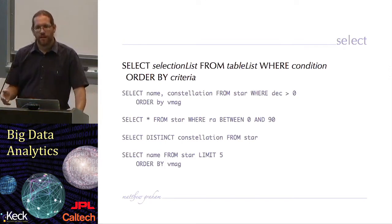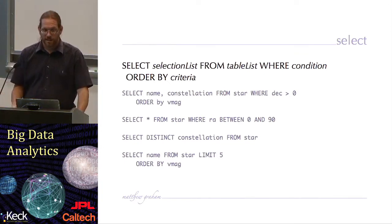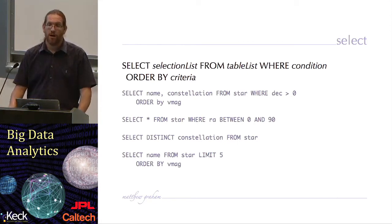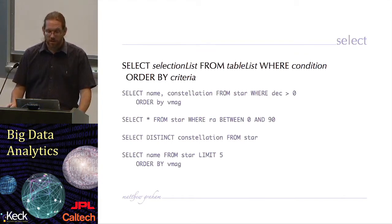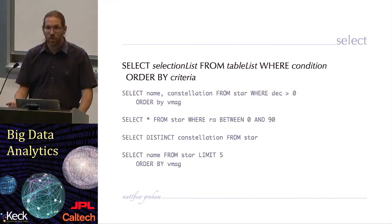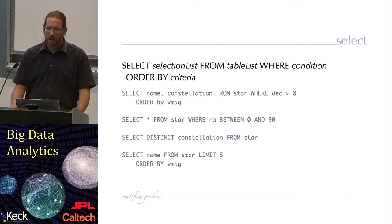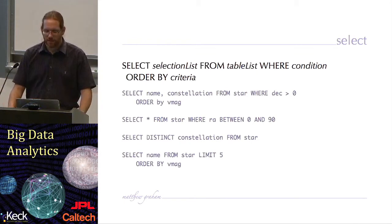In our first example, let's consider that we have a table of stars. It has columns called name and constellation. The table itself is called star. There are also columns of positional information — right ascension and declination — and magnitude information. The first statement, select name and constellation from star where dec is greater than zero order by magnitude, will return the name and constellation of each star for those stars which are above a declination of zero, presented in order of increasing V magnitude.